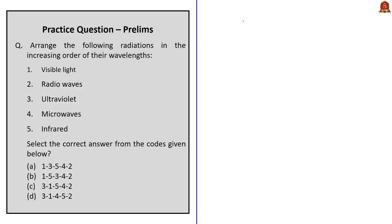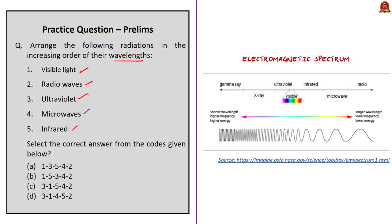Now look at this practice question: Arrange the following radiations in the increasing order of their wavelengths — visible light, radio waves, ultraviolet, microwaves, infrared. The correct order is ultraviolet, visible light, infrared, microwaves, and radio waves as you can see in the picture. So the correct answer is option C.